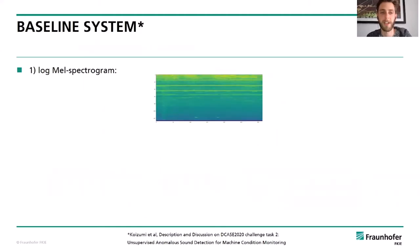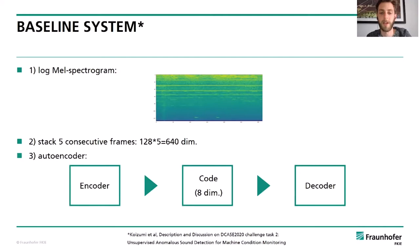The baseline system of the challenge consists of the following steps. First, a log-mel spectrogram is computed from the audio file with 128 mel bins, then five consecutive frames are stacked into one vector, which is used as input for an autoencoder with a very small bottleneck dimension of eight, trained by minimizing the mean squared error. After that, this error is used as a decision score, because the assumption is that files belonging to a normal machine have a low reconstruction error, while files belonging to defective machines have a high reconstruction error.